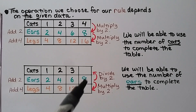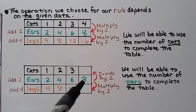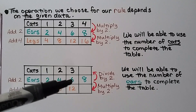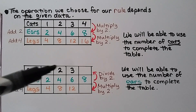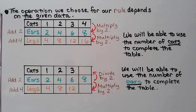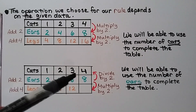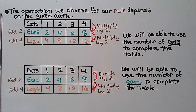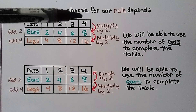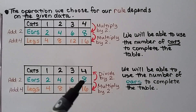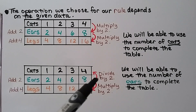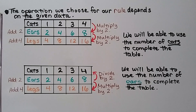Now here we have the number of ears, but we don't have the number of cats and we don't have the number of legs. So we'll use the number of ears to complete the table. 6 divided by 2 is 3, 4 divided by 2 is 2, and so on. So we do 8 divided by 2, which is 4, then 8 times 2, which is 16. Because we were given the number of cats, we multiplied by 2 going down twice. Because we were only given the number of ears, we had to go up and divide by 2, then go down and multiply by 2. The operation we choose for our rule depends on the given data.